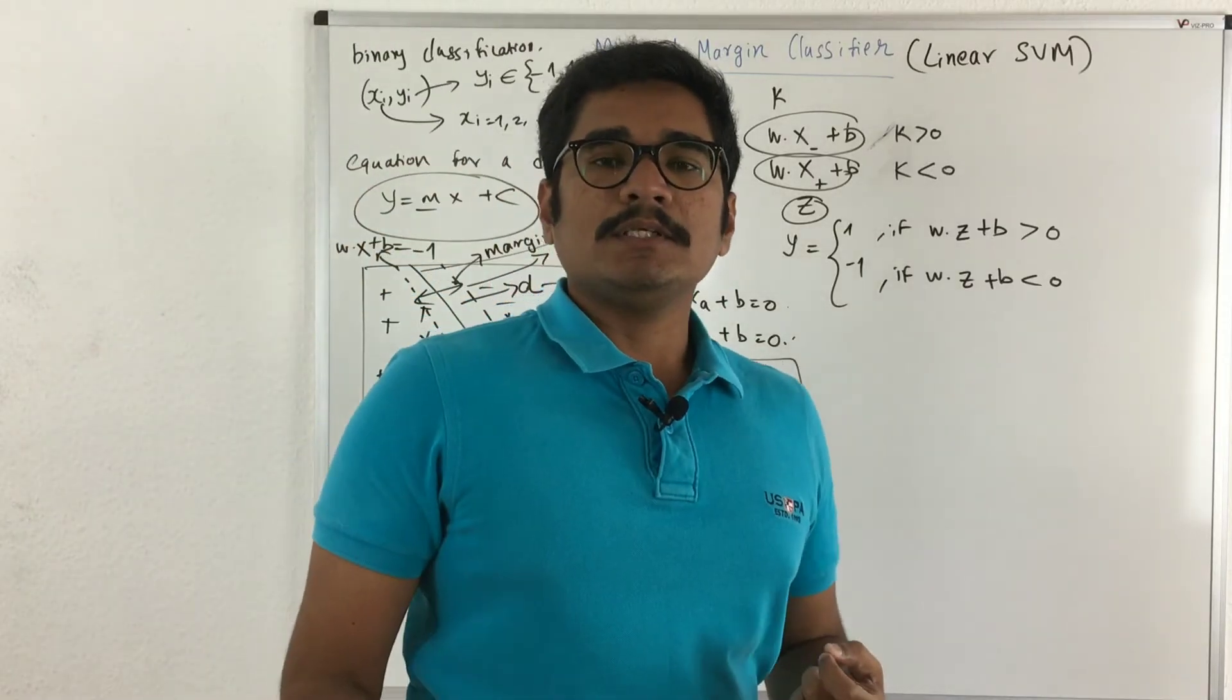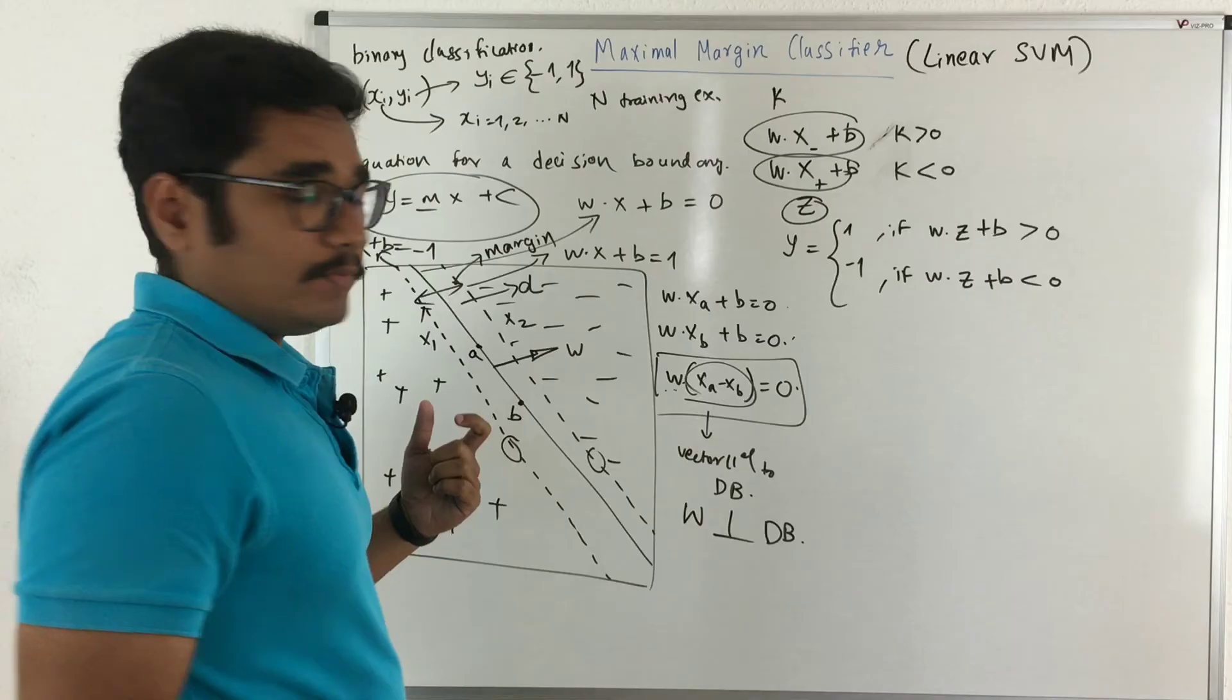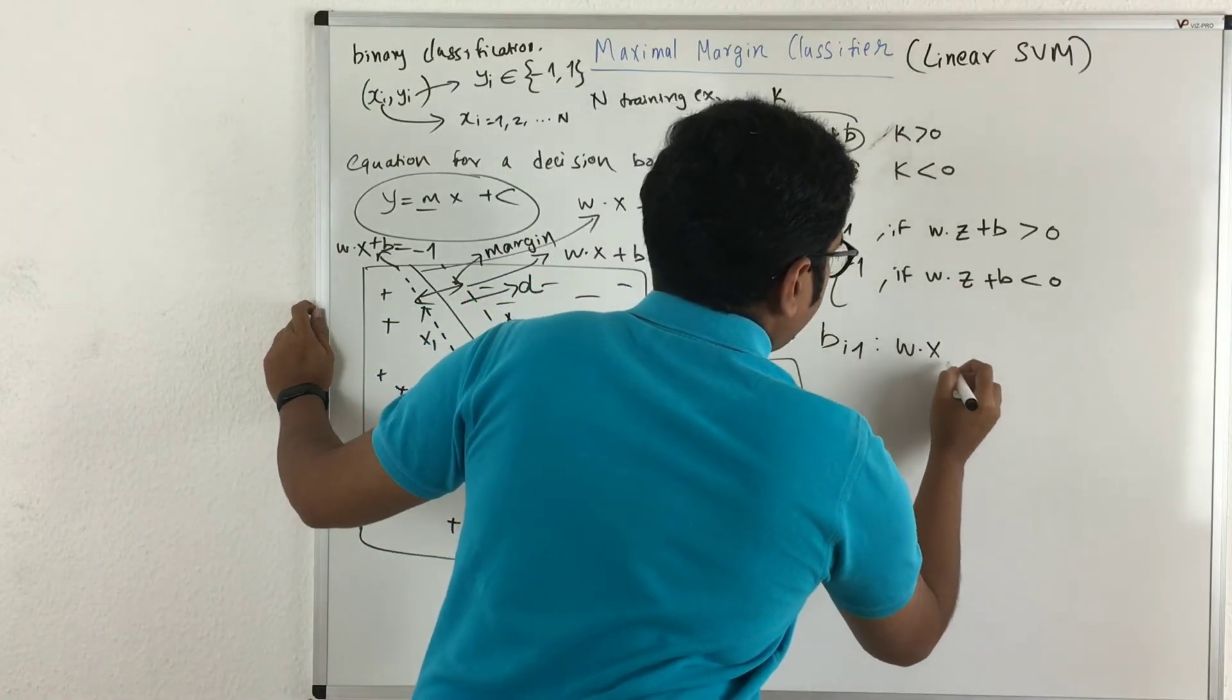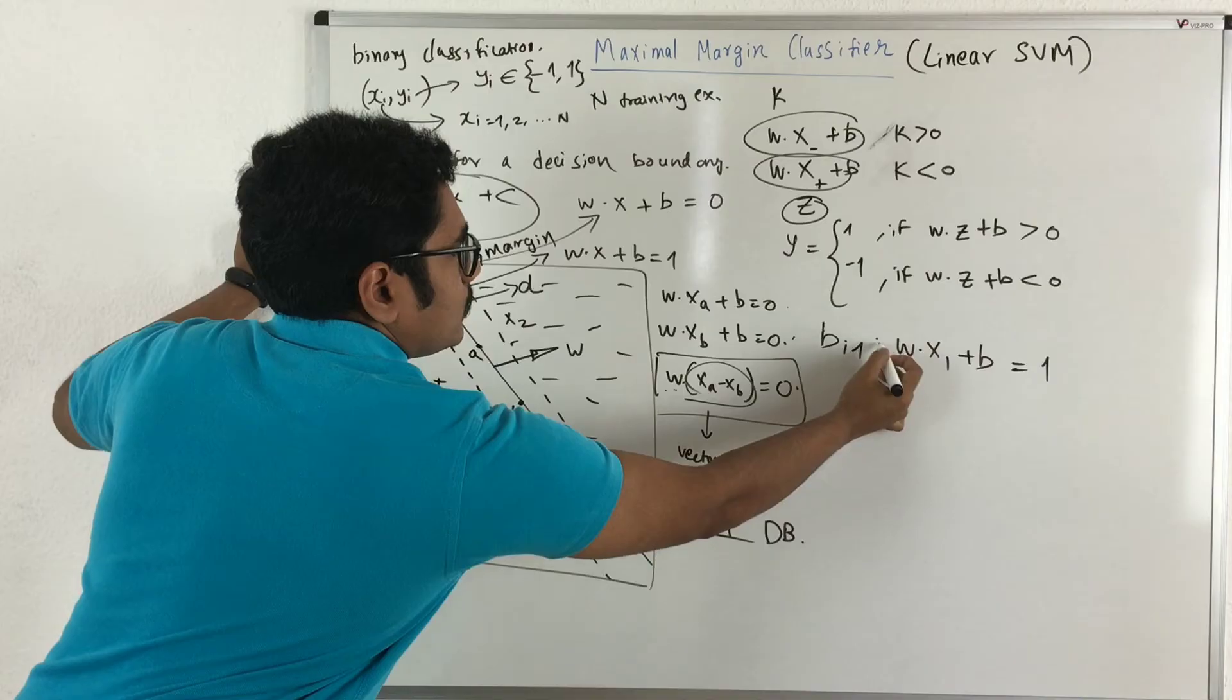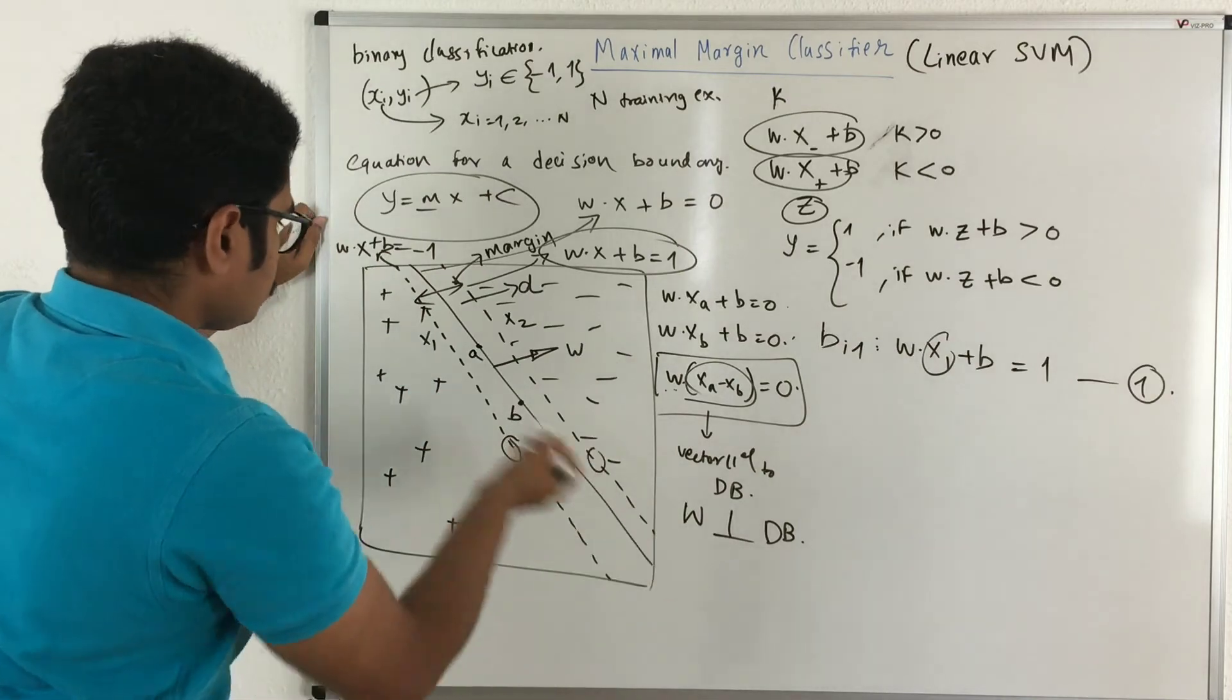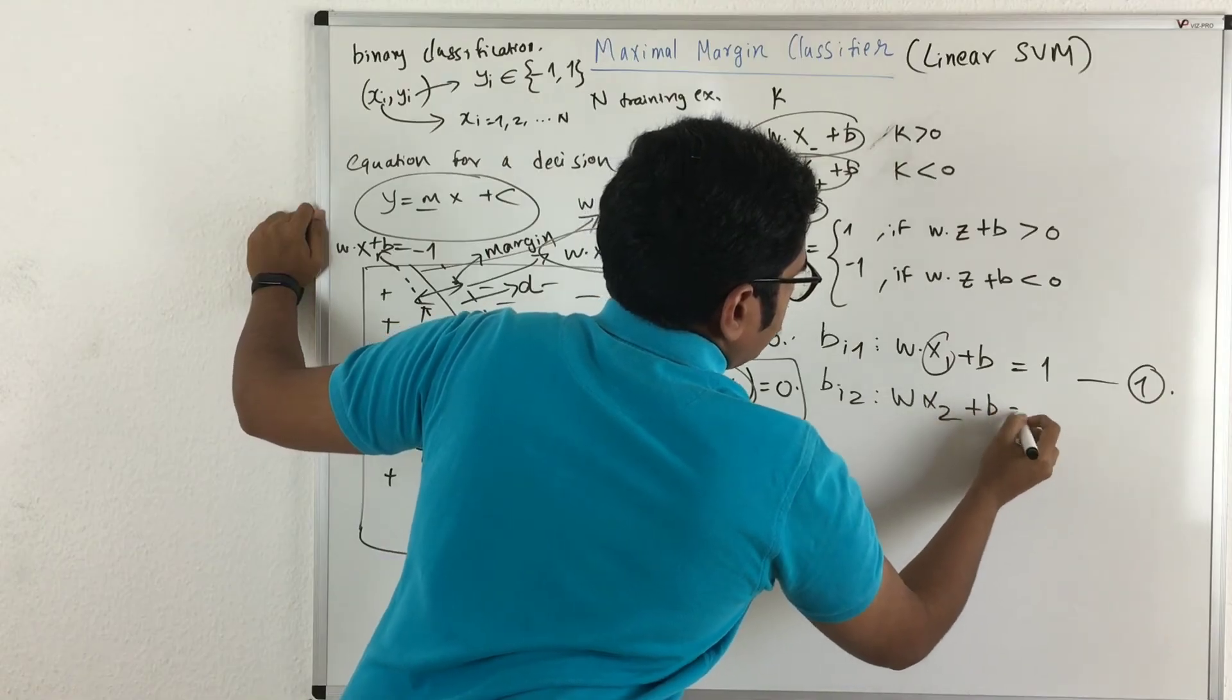Now we shall do one more activity on this, that is we'll calculate the margin of a linear SVM. So for that, what we need to do is we should have to take two equations. That is we have this boundary, Bi1. So Bi1 is the upper bound. So it's given by W·X1 plus B, and let us take this as in this format. Let this be our equation 1. So that is the upper bound, that is this one. X1 is I've just considered a point on this.